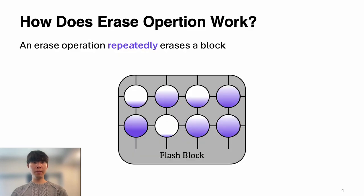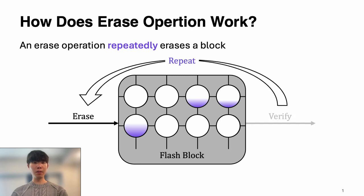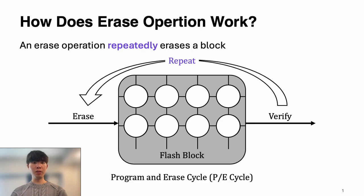In NAND flash memory, a set of flash cells form a flash block. To erase a block, an erase operation ejects electrons in every cell in a block. After that, we need to verify if a block is completely erased or not. If not, the same process continues until the block is completely erased. After the block is completely erased, we say PE cycle increases.